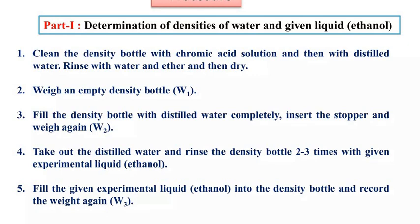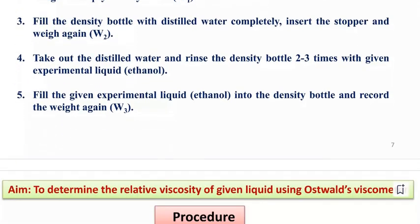Procedure Part 1: Determination of density of water and given liquid ethanol. Clean the density bottle with chromic acid solution and then with distilled water. Rinse with water and ether and then dry. Weigh an empty density bottle, that weight is W₁. Fill the density bottle with distilled water completely, insert the stopper and weigh again, that is W₂. Take out the distilled water and rinse the density bottle 2-3 times with the given experimental liquid ethanol. Fill the given experimental liquid ethanol into the density bottle and record the weight again, that is W₃.